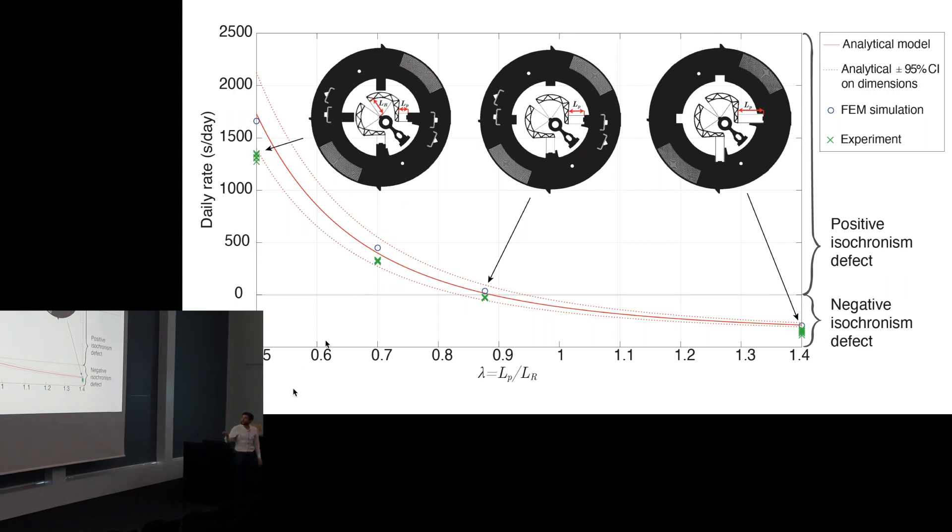Here you can see for short blades, long blades, I have a defect that is positive and here negative, so I can actually tune it. And this is my theoretical model, my simulations and my experiment, and everything matches and shows that it works.